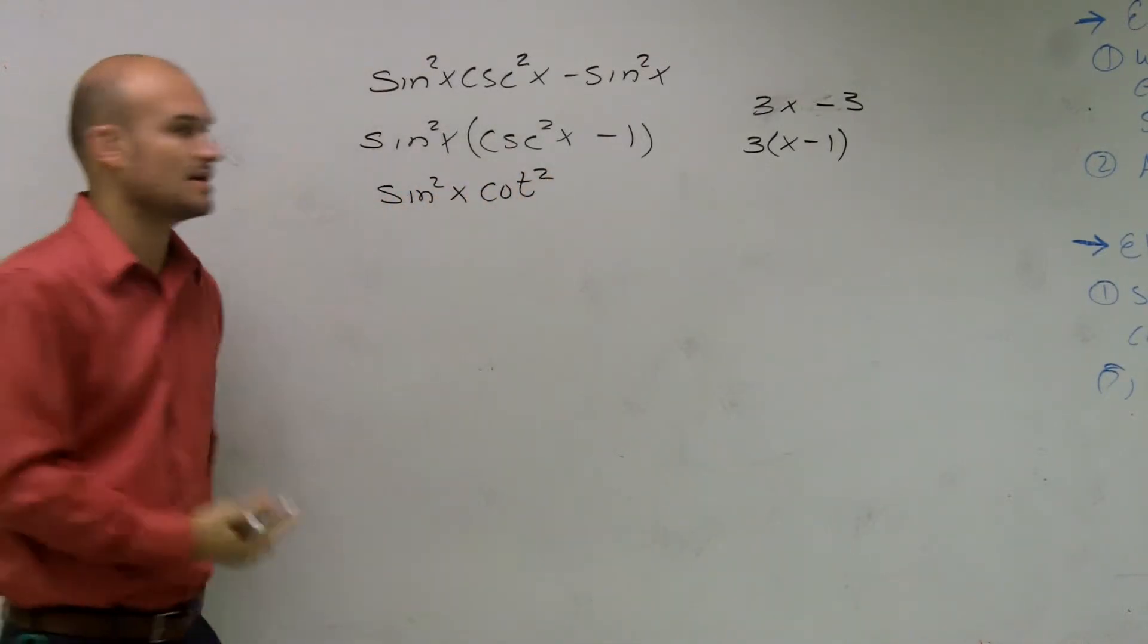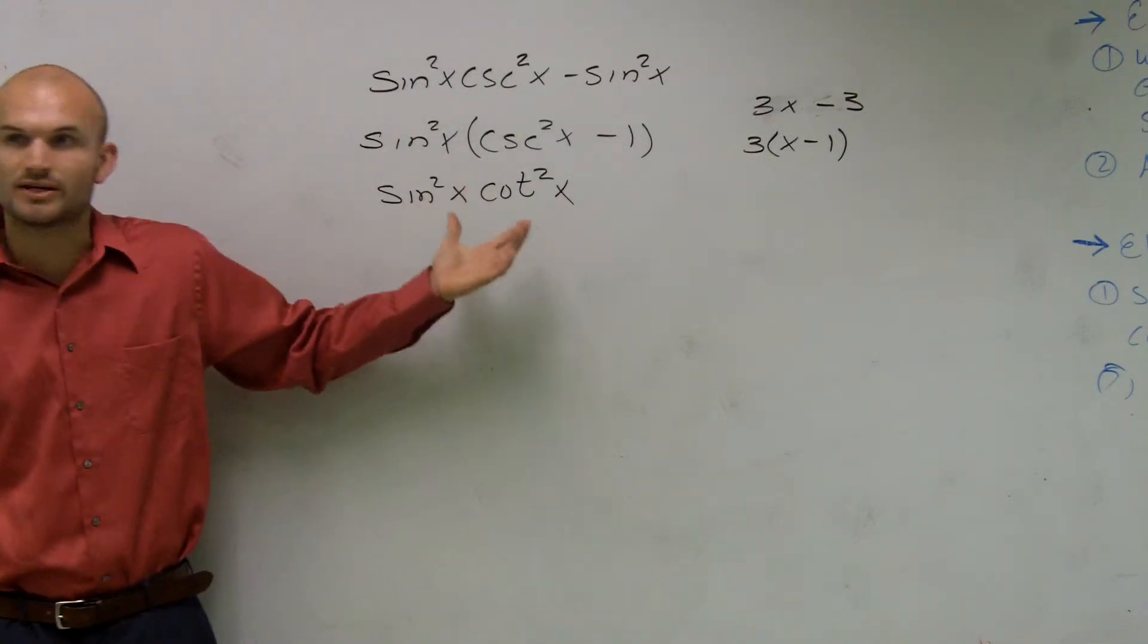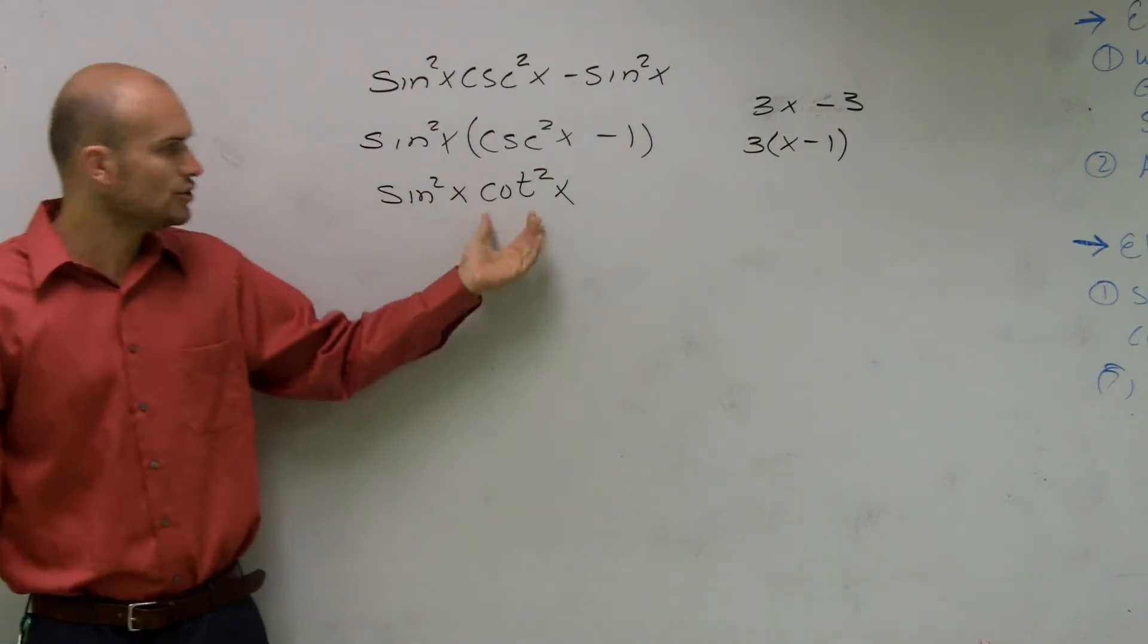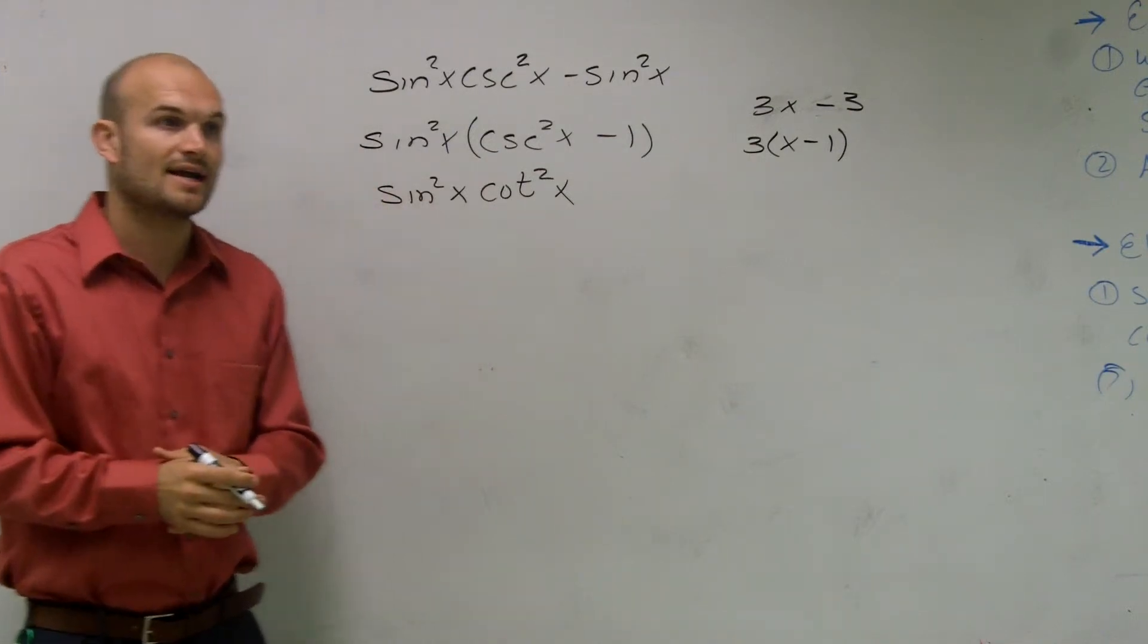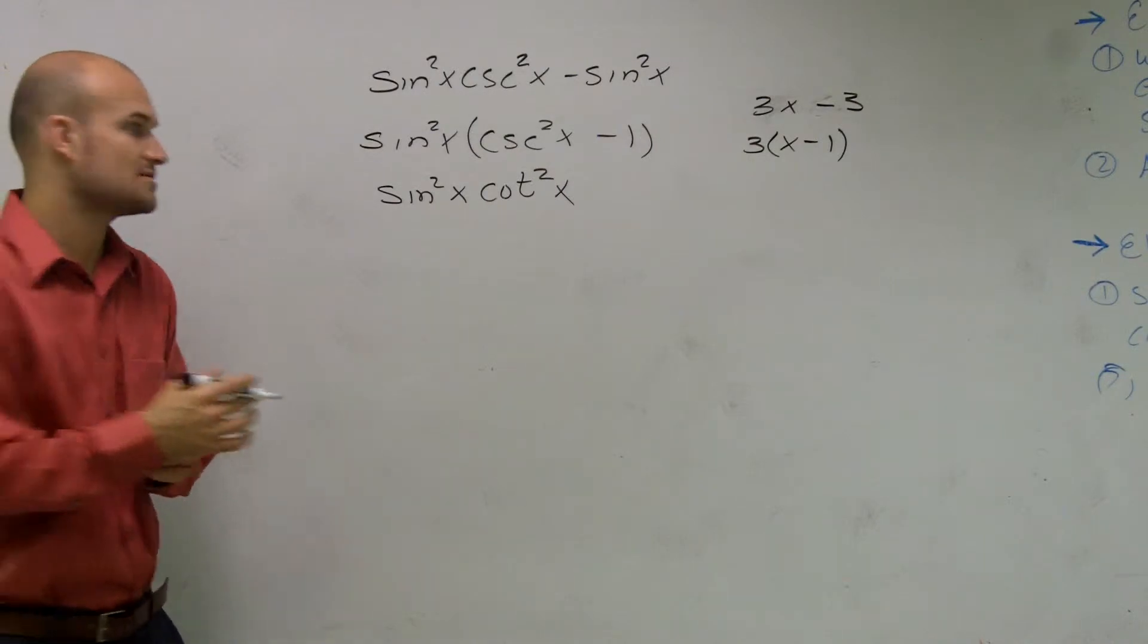Right? If I put that one to the other side, I'm going to get cotangent squared of x. Now, I did simplify this, but can I go any further with this simplifying? Well, what is cotangent squared? If I look at my trig identity, I can rewrite that as—oh, I'm sorry—cosine squared over sine squared, right?